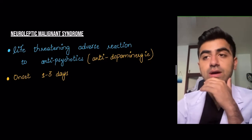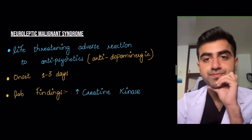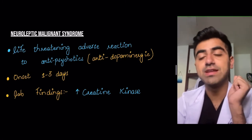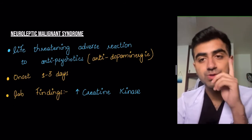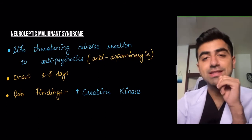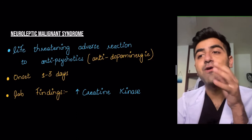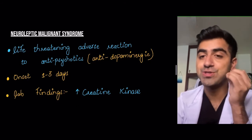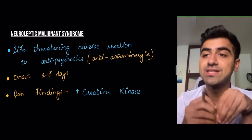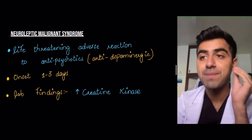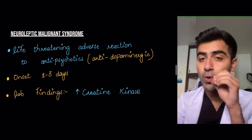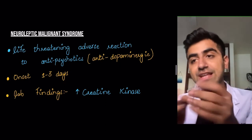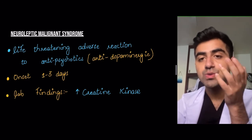Onset is around one to three days after starting or taking a larger dose of these drugs. Lab findings include increased creatine kinase. Why? Because of muscle rigidity — sustained muscular contraction leads to damage to myocytes. Damage to myocytes causes the release of creatine kinase, which is a very abundant enzyme in myocytes. Sustained contraction causes the bursting and release of creatine kinase into the serum.